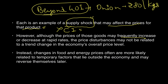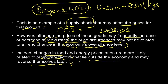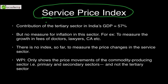The prices of these goods may frequently increase or decrease rapidly, but the price disturbance is not reflective of the economy's overall price level. Just as a student's marks may suffer due to frequently changing teachers — an external factor beyond their control — these are temporary factors that automatically reverse later. Since we cannot control them, we exclude them from core inflation.